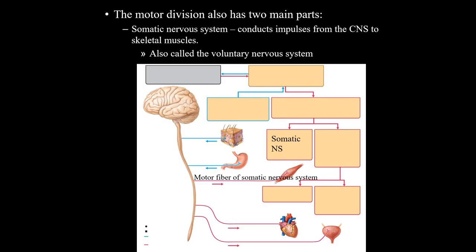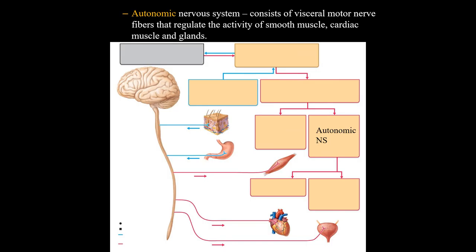The motor system has two branches depending on whether it's something you think about consciously or something that just happens. The somatic nervous system is the stuff you have to think about to make it happen - it's also called the voluntary system, and it only controls skeletal muscle. On the other hand, you have the autonomic system. This is the stuff that happens automatically - the involuntary nervous system - and it controls cardiac muscle, smooth muscle, plus all your glands.